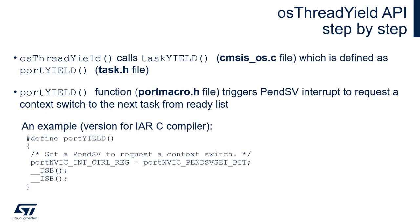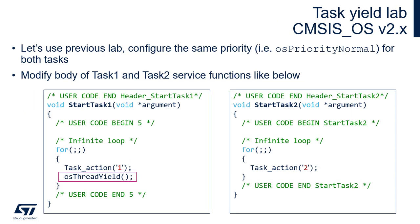Below we can see an example for the IAR compiler. At the beginning we set the PendSV bit to trigger PendSV, and we use two instruction barriers to ensure the bit is fully set before execution of the next instruction. It is also possible to use this function from an interrupt — in that case, instead of portYield, portYieldFromISR would be executed, but the effect is exactly the same.